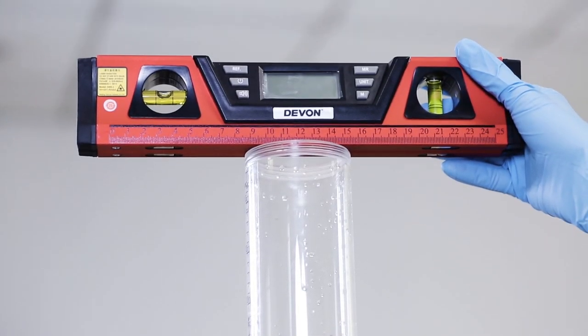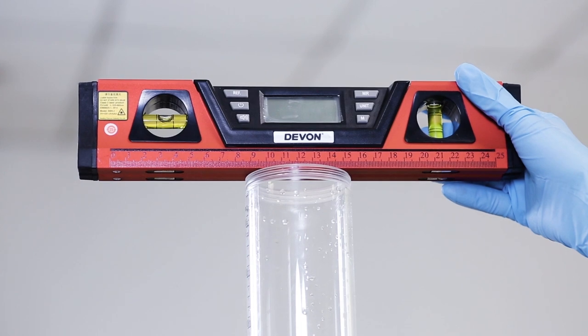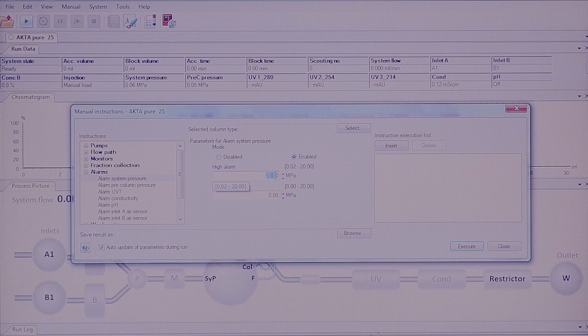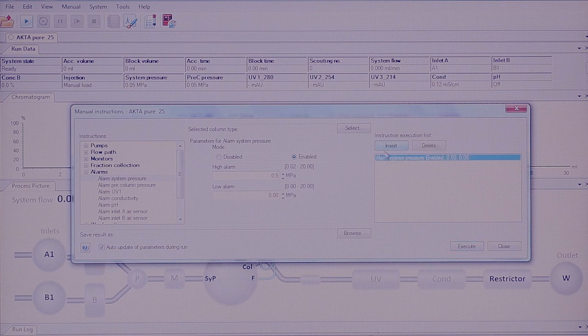Level the column. If not level, the packed column may produce broad or crooked bands. Before start, set a pressure alarm in Unicorn according to the column hardware to be used. This information is found in the instructions for use for your column. In this case it is 0.5 MPa.